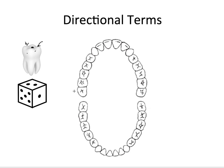The outer surface — the surface that points out towards the face — is called the facial surface, F for facial. The backside, the side that is closest to the tongue, is called the lingual surface, L for lingual, which makes sense because 'lingua' means tongue.